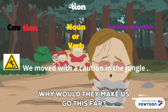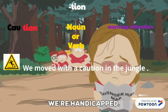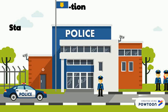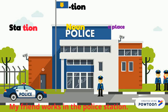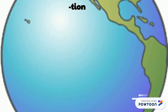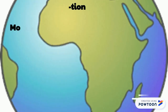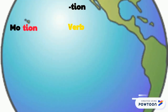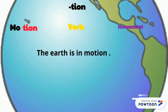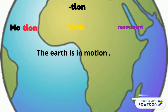Station. 'Station' is a noun which means a place. My friend works in the police station. Motion. 'Motion' is a verb which means movement. The earth is in motion.